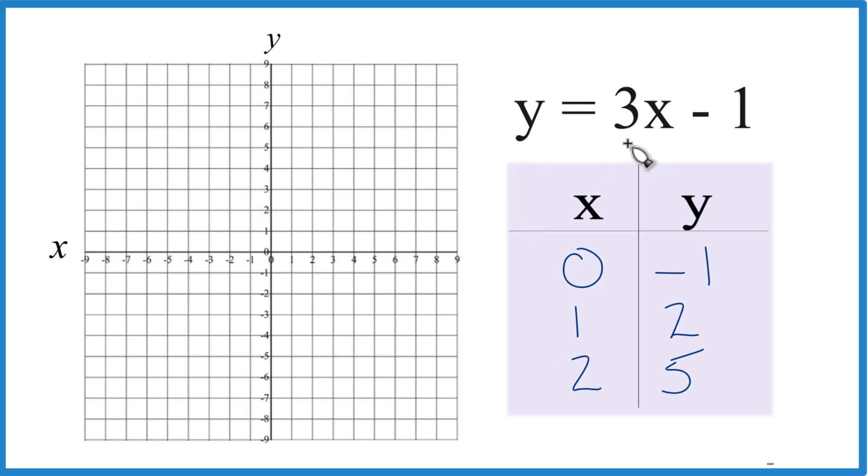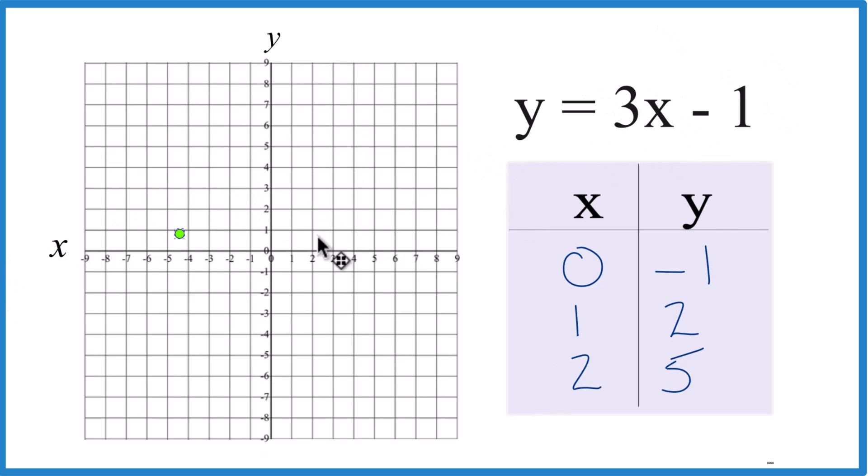So I have these points, and I can graph them, and I'll have my line for y equals 3x minus 1 here. So x is 0, y is negative 1, 0, negative 1, that's the first point.